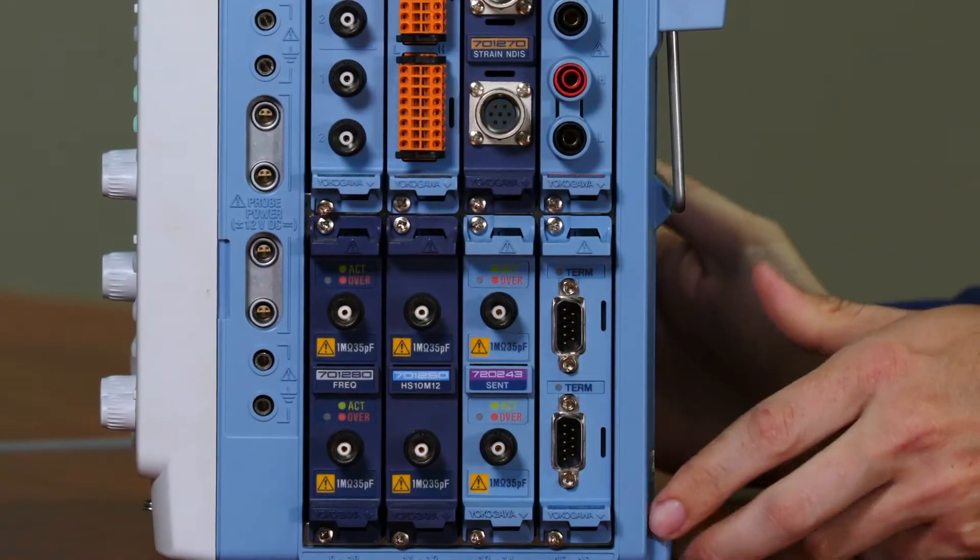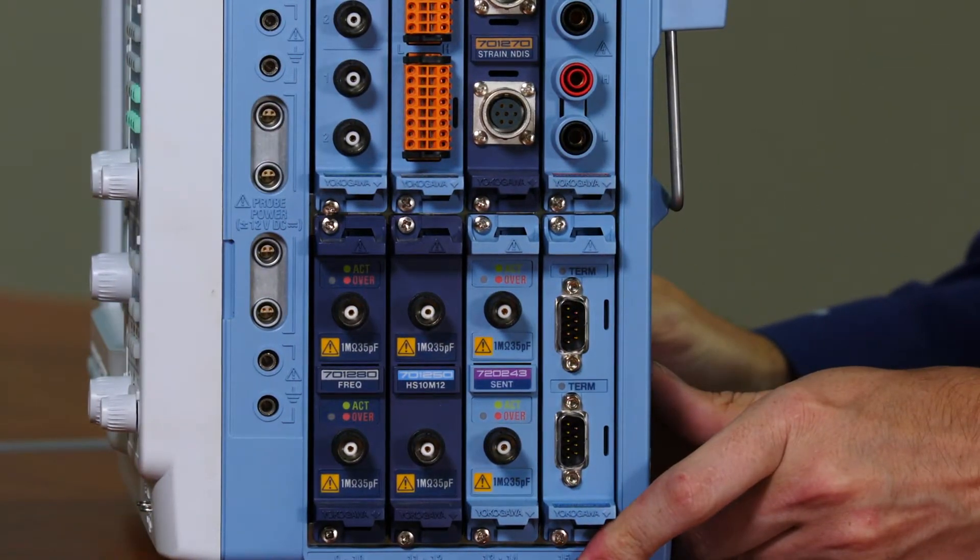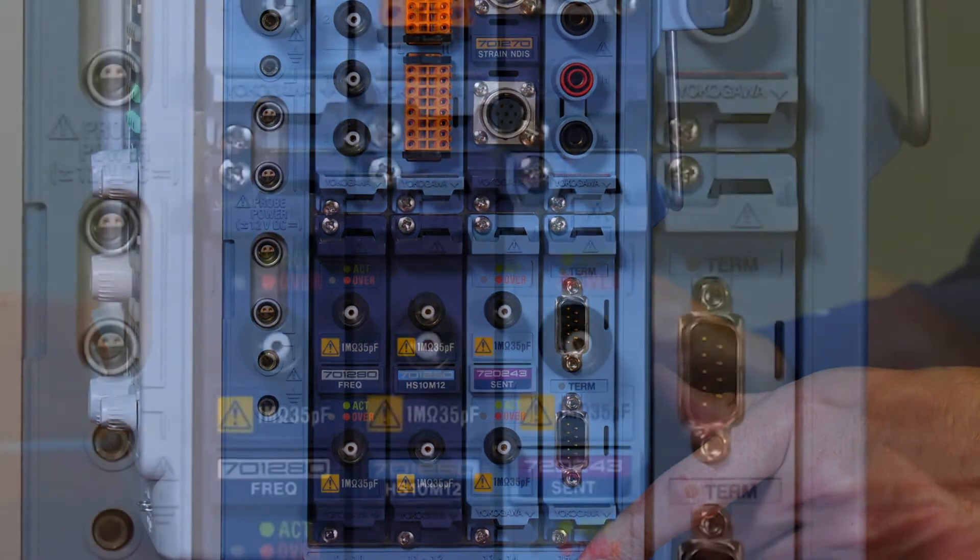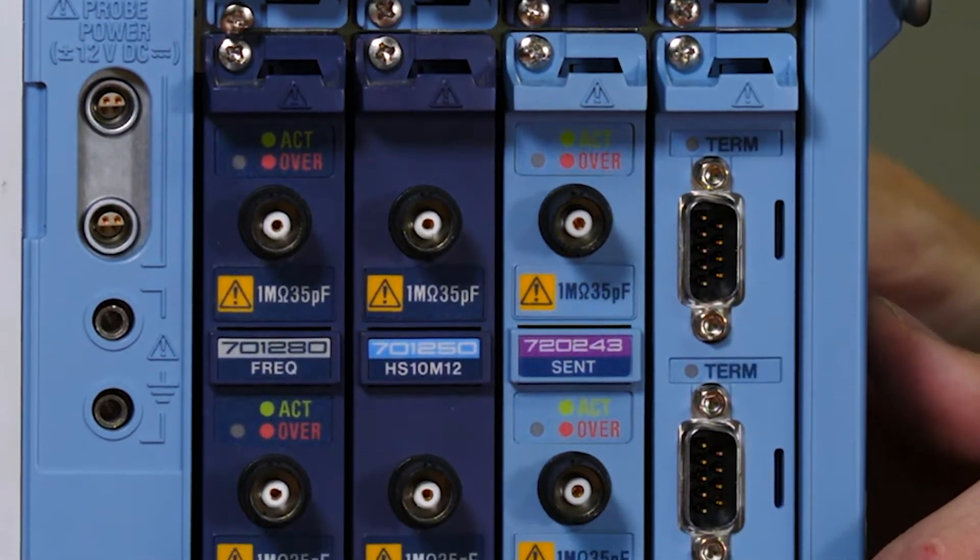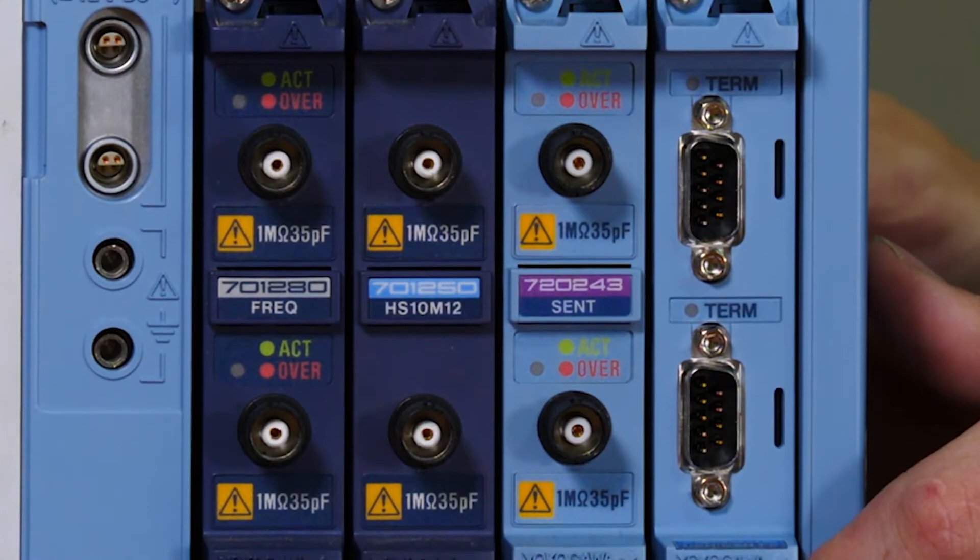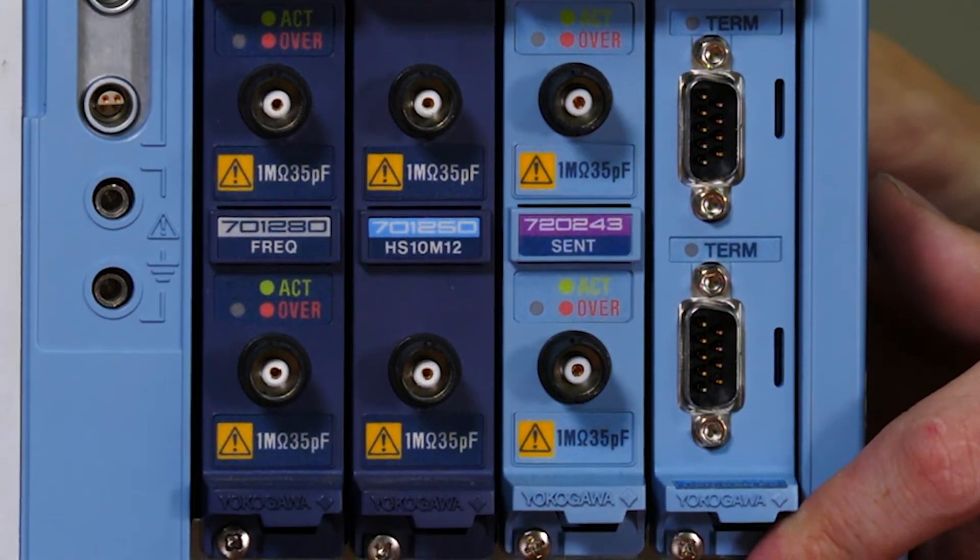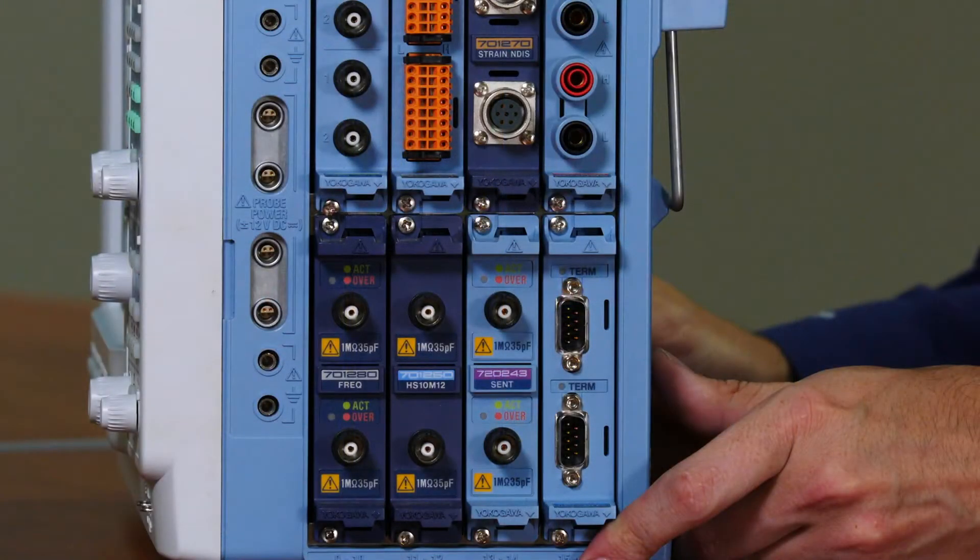There are a few requirements for using the DL850EV serial network analysis functions. The instrument must be a DL850EV, or for the DL350 it must have the VE option installed. The module must be installed in Slot 5 through 8.